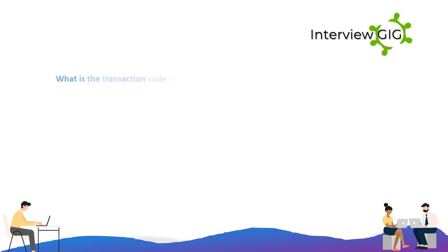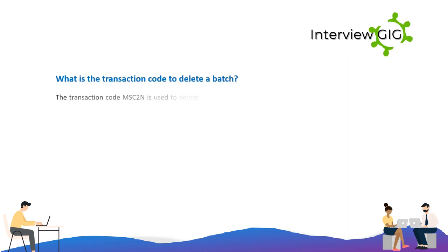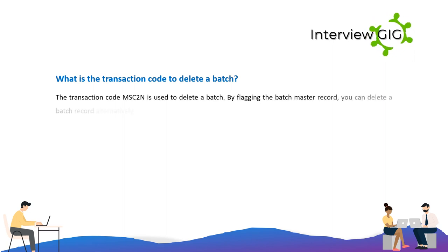What is the transaction code to delete a batch? The transaction code MSC2N is used to delete a batch. By flagging the batch master record, you can delete a batch record alternatively.